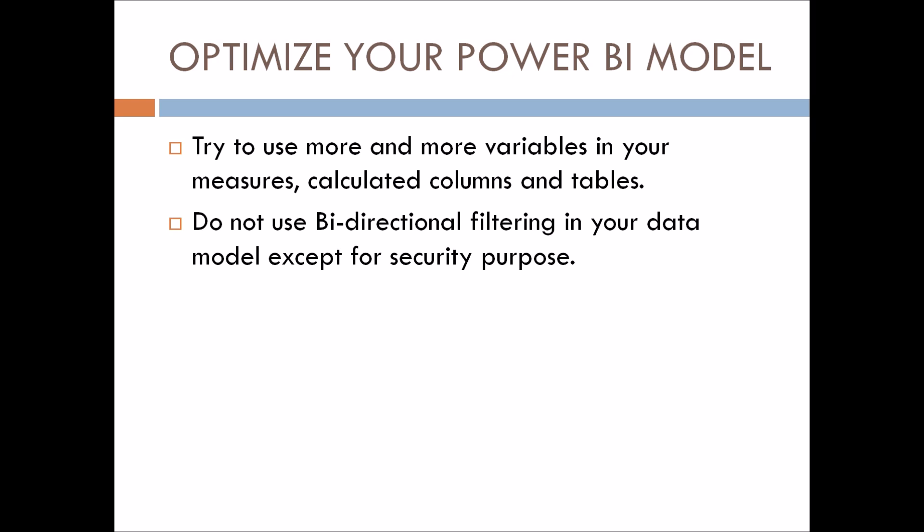Do not use bad bi-directional filtering in your data model except for security purposes. Bi-directional filtering is required when implementing Row Level Security (RLS), but other than that, unless you have no other choice, stick to one-to-many filtering from dimension to fact tables. If you must implement bi-directional logic, use the CROSSFILTER function in your measures instead of setting bi-directional filtering on the relationship.